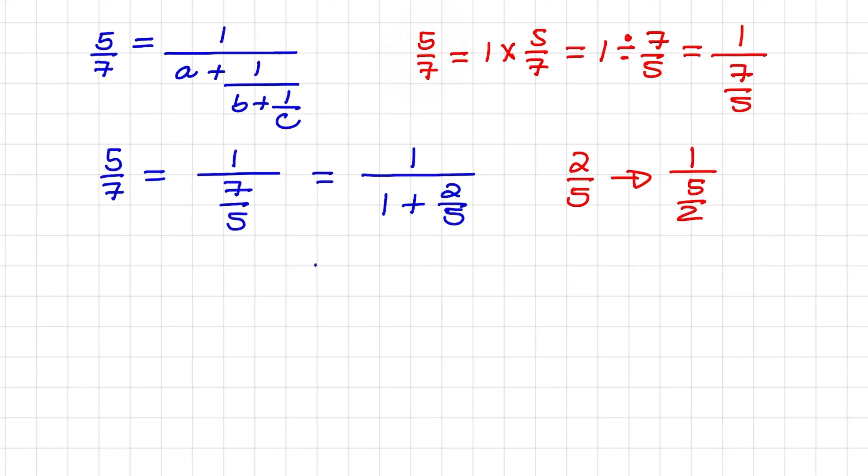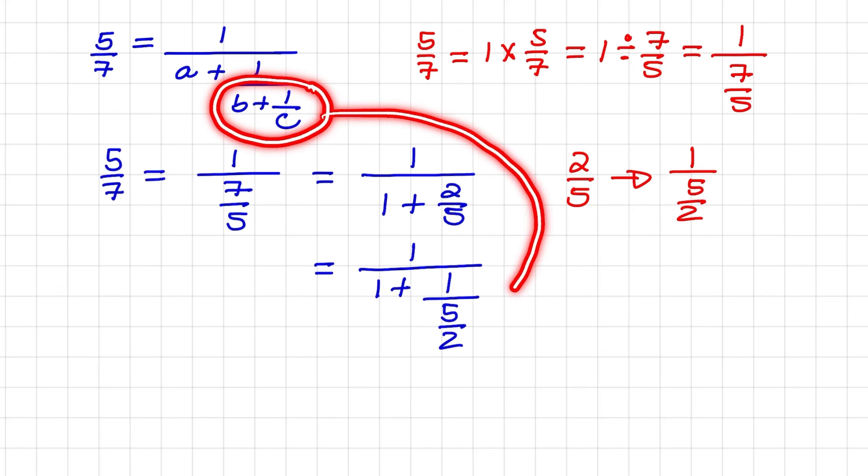So that would lead to 1 over 1 plus 1 over 5 over 2. Now if we compare again with B plus 1 over C, we can see that that is equal to 5 over 2.